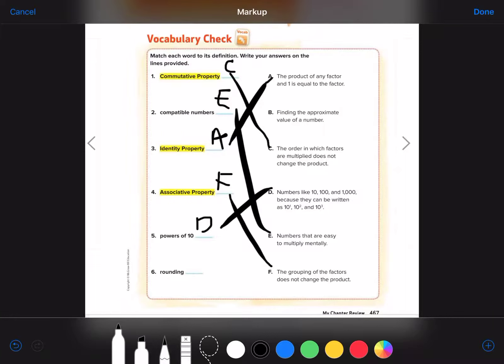And rounding. Probably the last one. B. Rounding is finding the approximate value of a number.